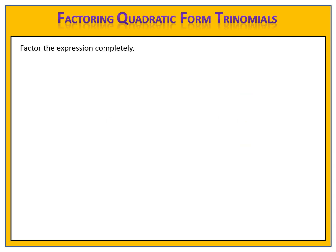Let's take a look at some examples. Our first example today: factor the expression completely — 2x to the 4th plus 15x squared minus 50. The first thing I look for is a greatest common factor, but I don't see one. I look at the exponents and notice that I have the proper exponent combination: x to the 4th, x to the 2nd, and a constant. I can use the grid.